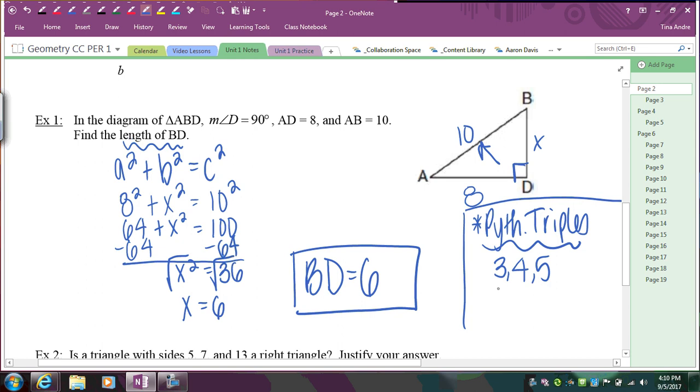Some other Pythagorean triples that are worth writing down, 5, 12, and 13, and any multiples of that. And then 8, 15, and 17, and any multiples.